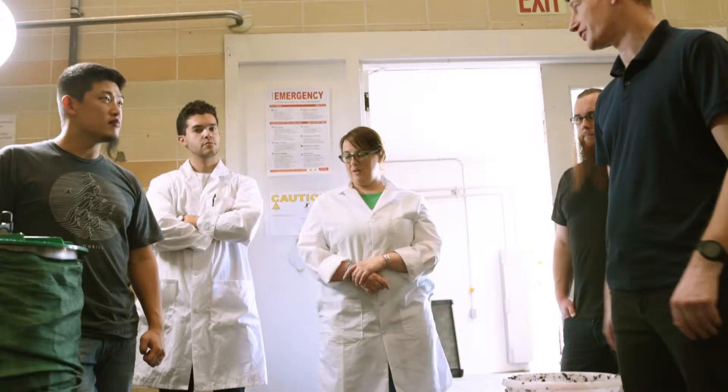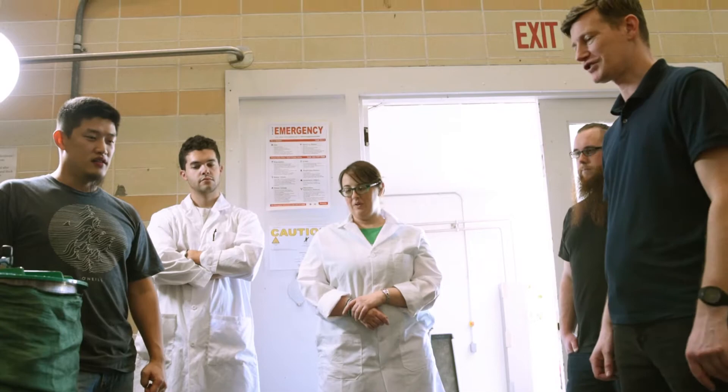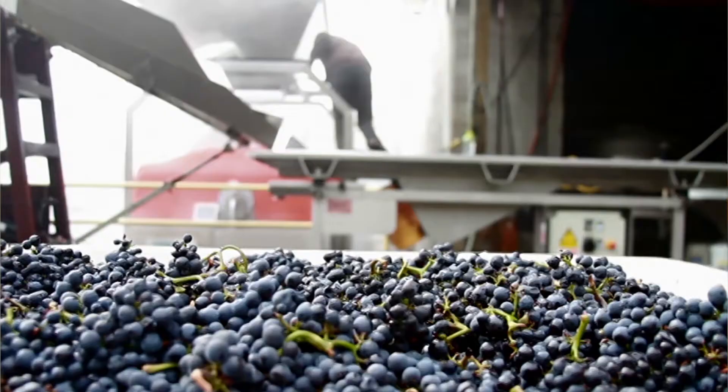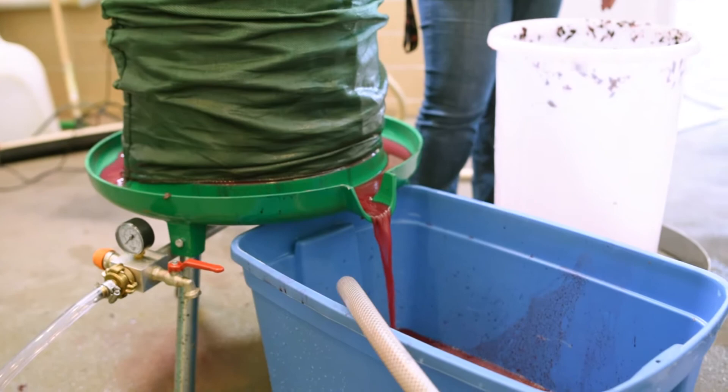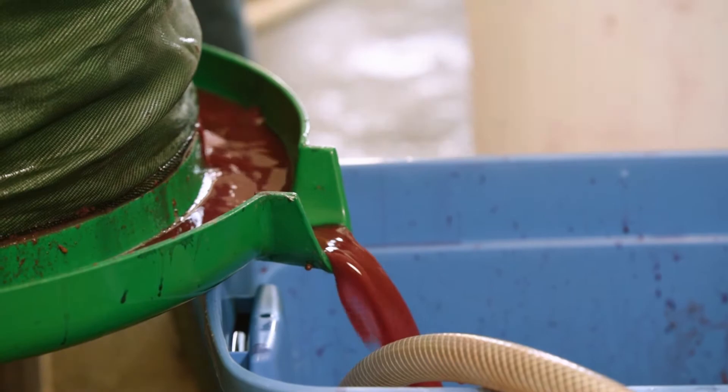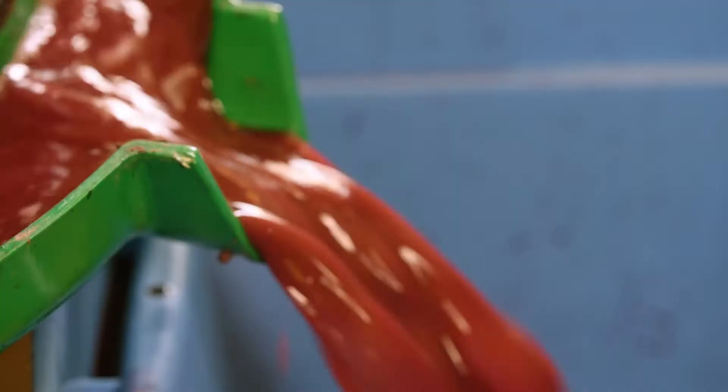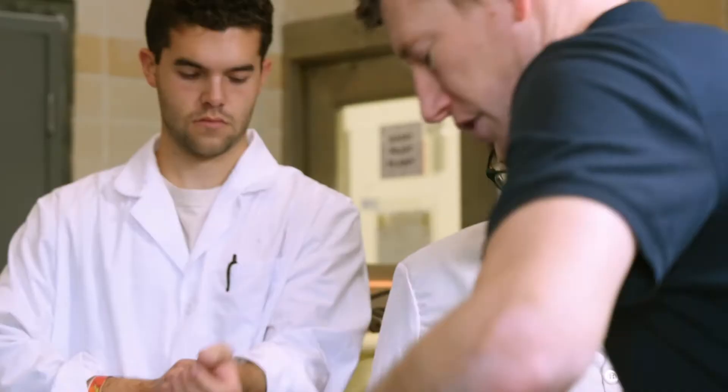You have the Saccharomyces cerevisiae strains of yeast, and those are kind of the workhorses of the fermentation industry. In winemaking, those are the yeast that are taking the sugars and producing alcohol. And then there's a whole host of other yeasts that can come in on the grapes or be naturally present in the winery — we often categorize those as non-Saccharomyces yeast. Some of them can produce desirable compounds, flavours, and aromas, and some of them produce undesirable flavours and compounds.